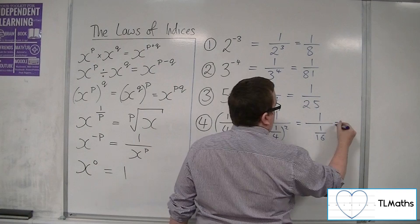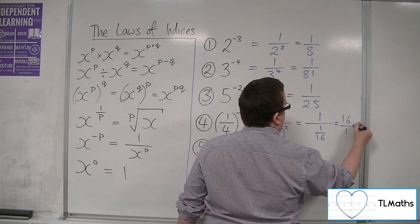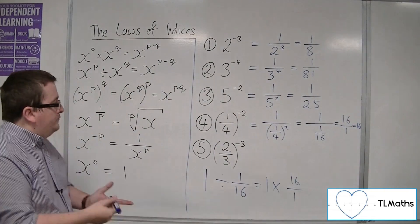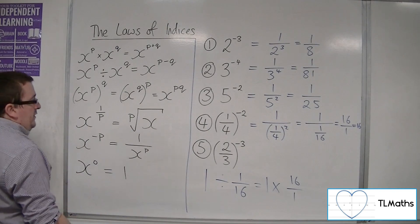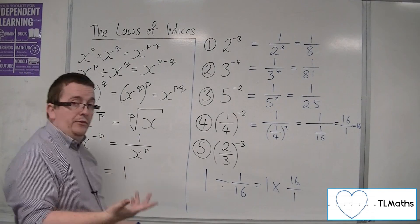So 1 lot of 16 over 1 is just 16 over 1, which of course is just 16. So 1 quarter to the minus 2 is actually 16.